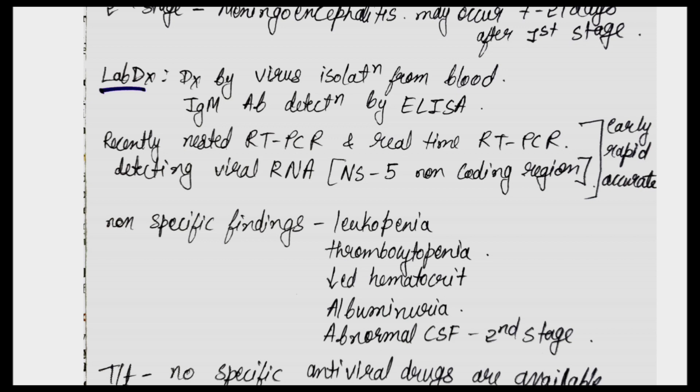Other nonspecific findings of Kyasanur Forest Disease include leukopenia, thrombocytopenia, decreased hematocrit, albuminuria, and abnormal CSF findings — the last seen in the second stage of meningoencephalitis.